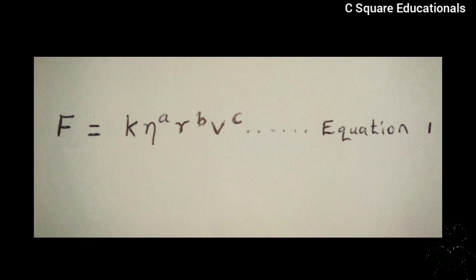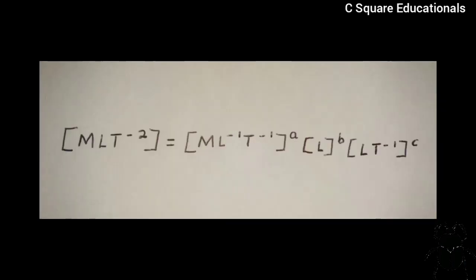Let us call this our equation 1. In this equation, K is the constant of proportionality. Then now, writing the dimensions of parameters on either side of the equation, we get [MLT^-2] is equivalent to [ML^-1T^-1]^A.